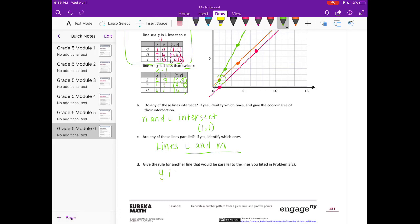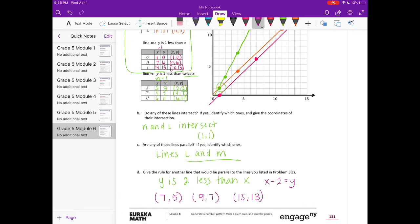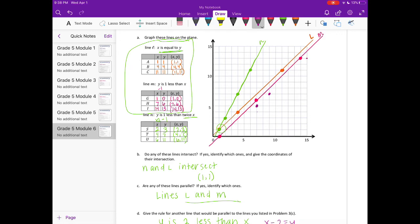My rule, I'm going to say I'll stick with something close to line M, so I'll say y is 2 less than x. Now let's check to see if this rule works. It's basically saying x minus 2 equals y. So if I have my x-coordinate of 7, then my y would be 5. If I have an x-coordinate of 9, my y would be 7. And if I have an x-coordinate of 15, my y would be 13. So let's plot those and see if this works. We have 7, 5, 9, 7, and 15, 13.